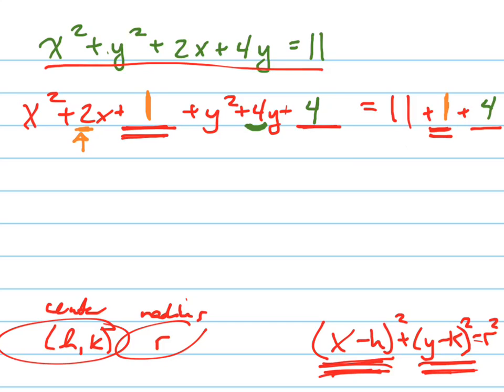Now the reason I do that is because now I can group this together right here and I can factor it. And how does that factor? It's going to be X plus 1 times X plus 1, which, what's another way to write that? X plus 1 squared. That's why it's called completing the square.